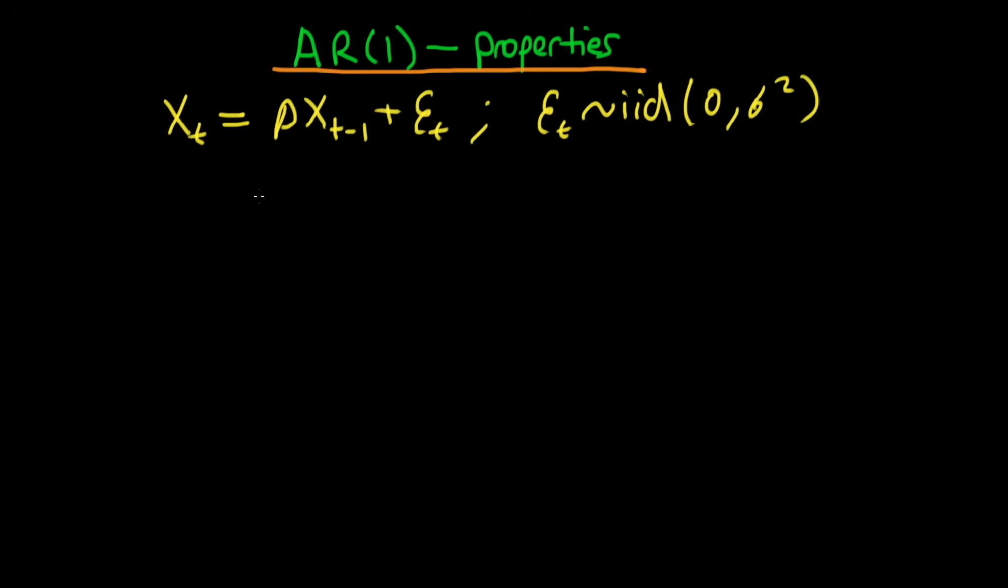In order to proceed and actually prove the conditions under which an AR(1) process is stationary, we're going to do something first. We realize that this particular process has to actually hold for all time periods, so it holds for Xt and it also holds for Xt-1.